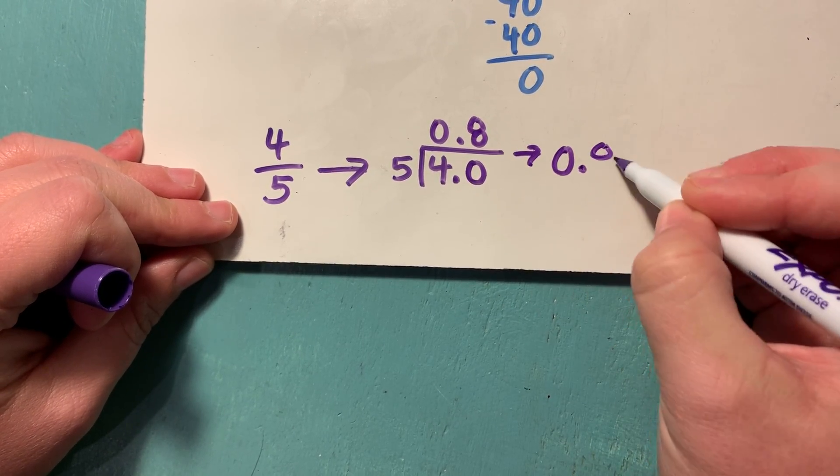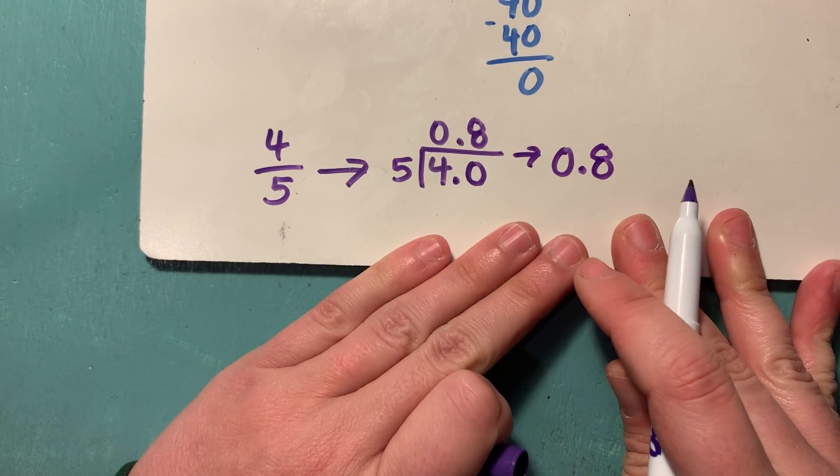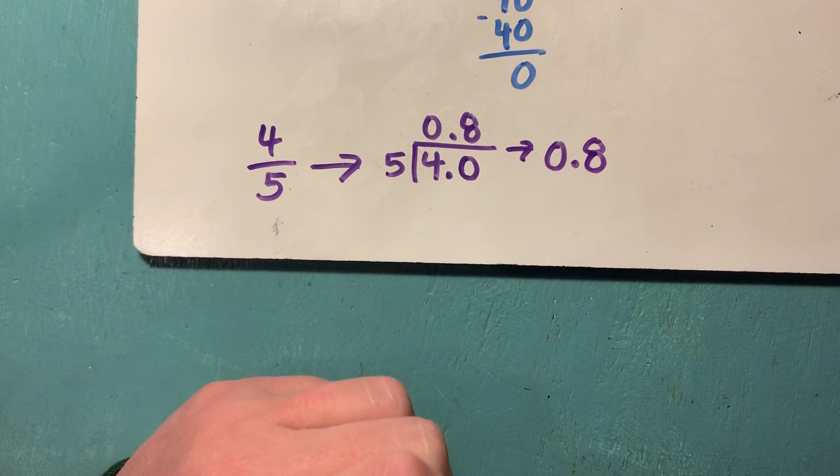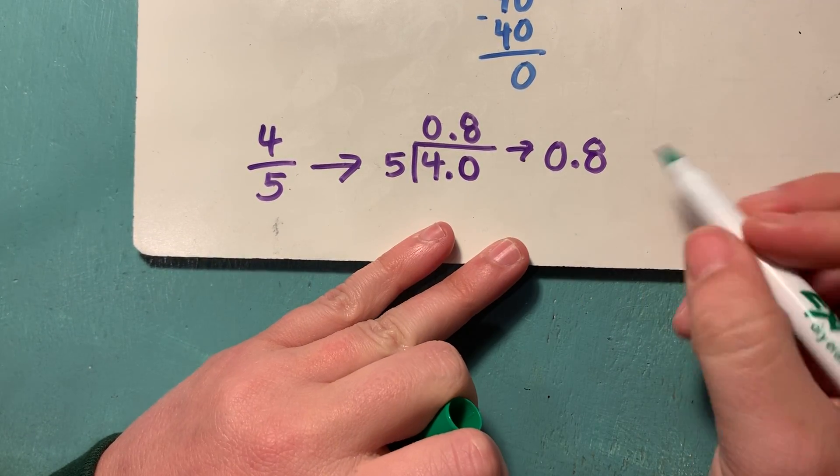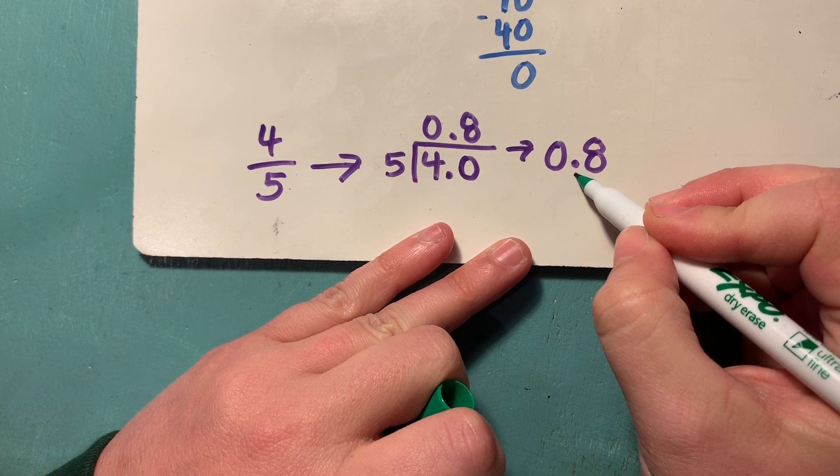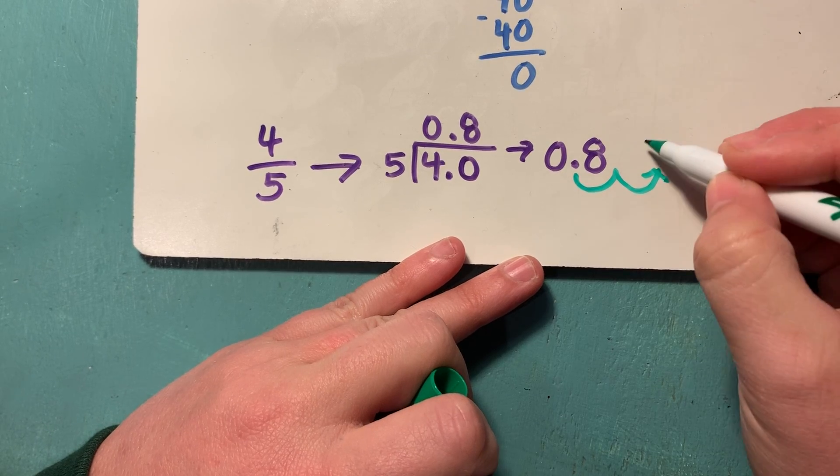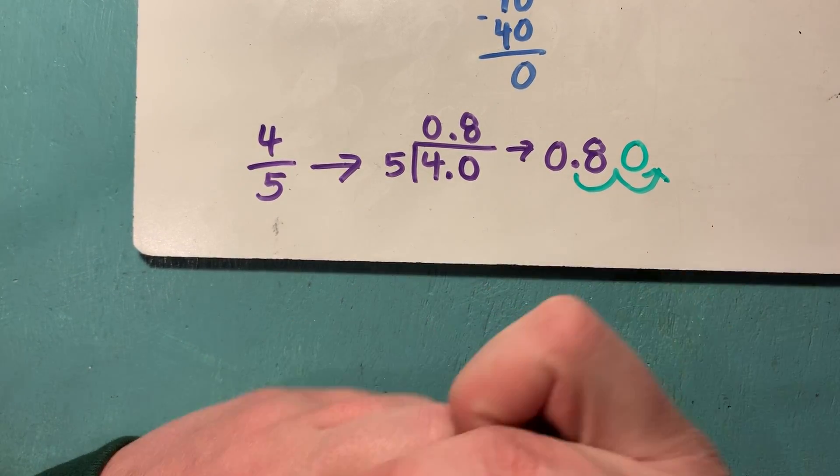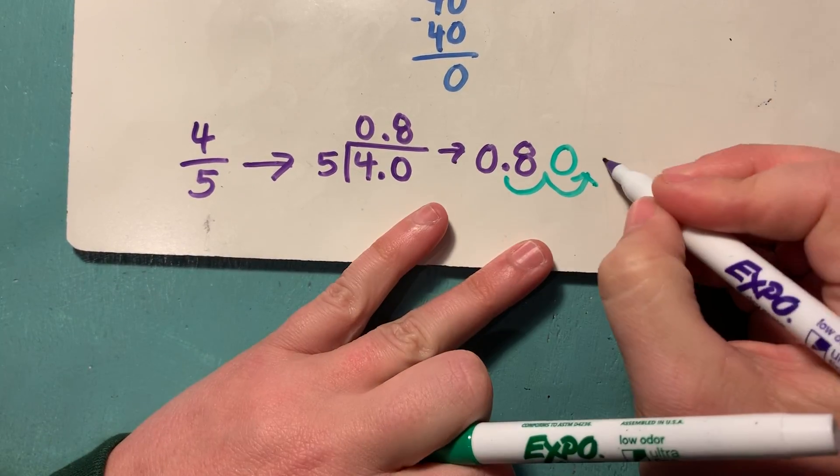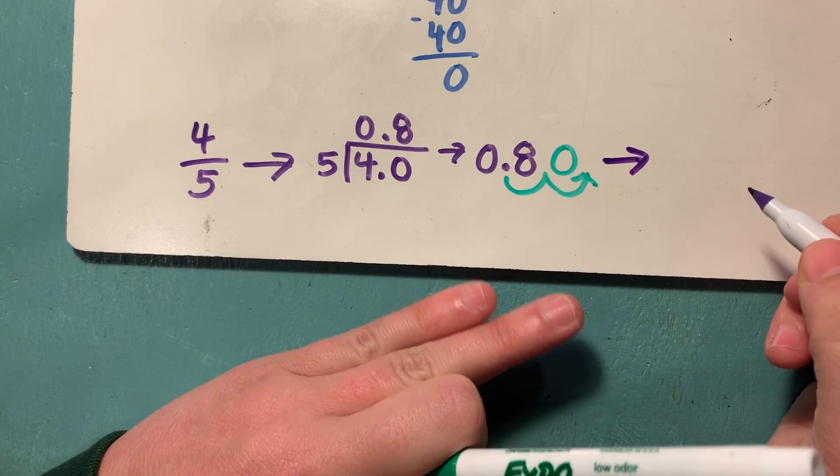So four-fifths as a decimal is eight-tenths. But remember to turn a decimal into a percent, we move the decimal place over twice. Once, twice. And what goes in that little empty space? A zero. So what is four-fifths as a percent? It is 80%.